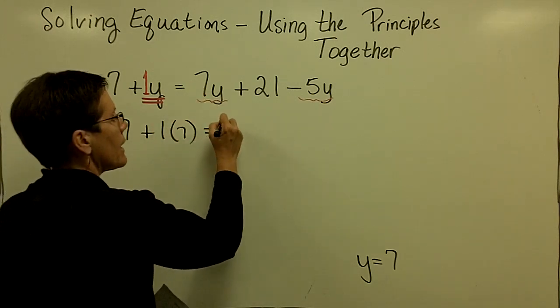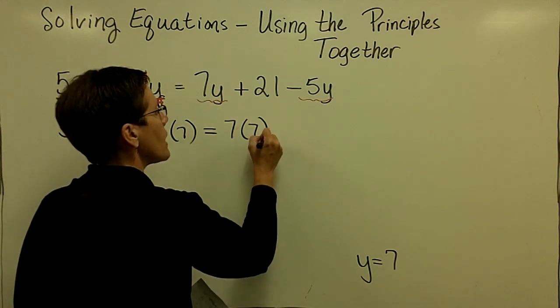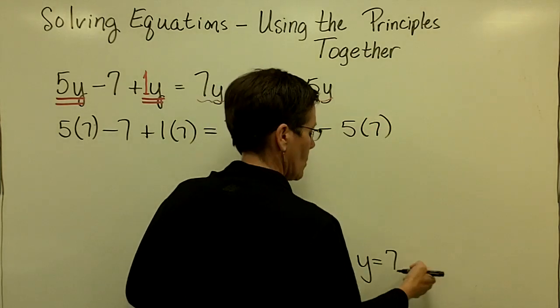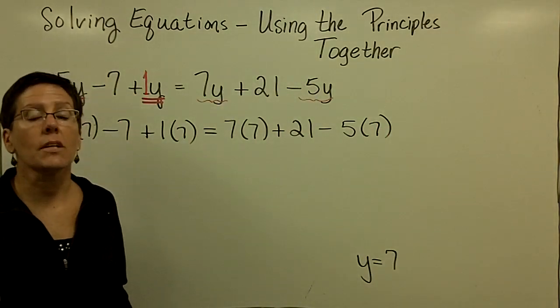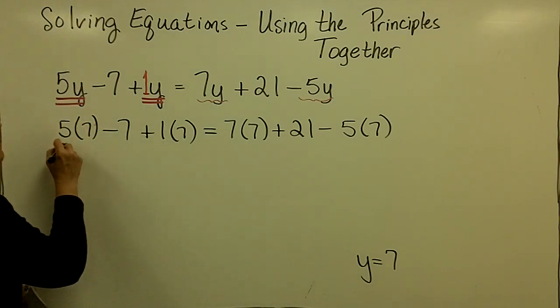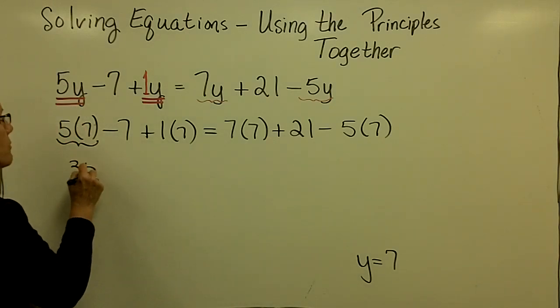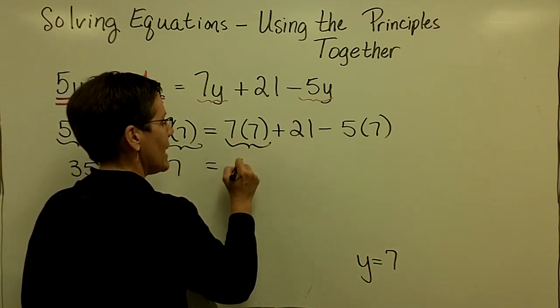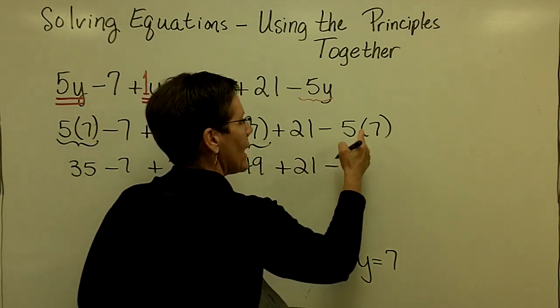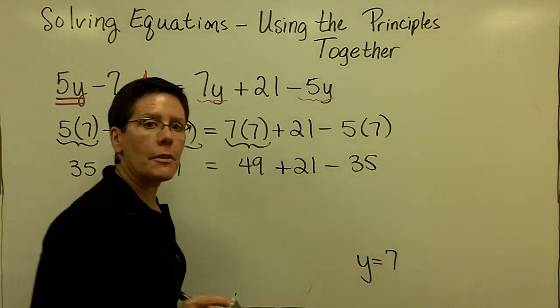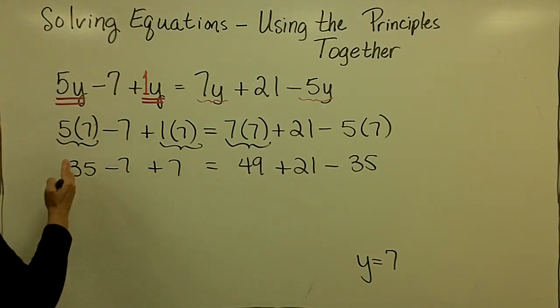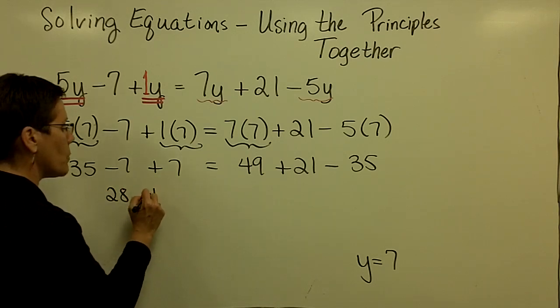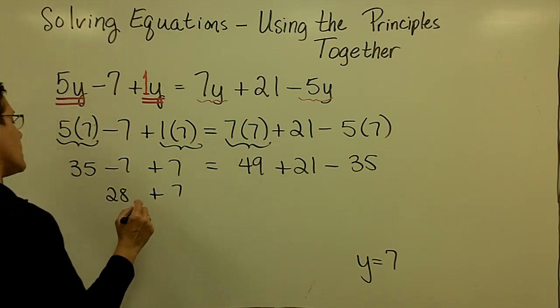On the right-hand side, I have 7 times y, which is 7, plus a 21, minus 5 times y, which is 7. Order of operations says I should multiply before I add and subtract. So I'm going to find this to be a 35, and this to be a 7. This is a 49, and this is a 35. And now I'm going to add and subtract working from left to right. So 35 minus 7 is 28. And then when I add 7 to that, I get 35.